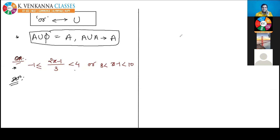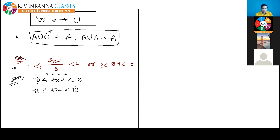I am solving the question. First, multiply by 3 on all sides: you get -3 ≤ 2x - 1 ≤ 12. Now add 1 on all sides: -2 ≤ 2x ≤ 13. Now divide by 2: -1 ≤ x ≤ 13/2. So the first inequality is solved.